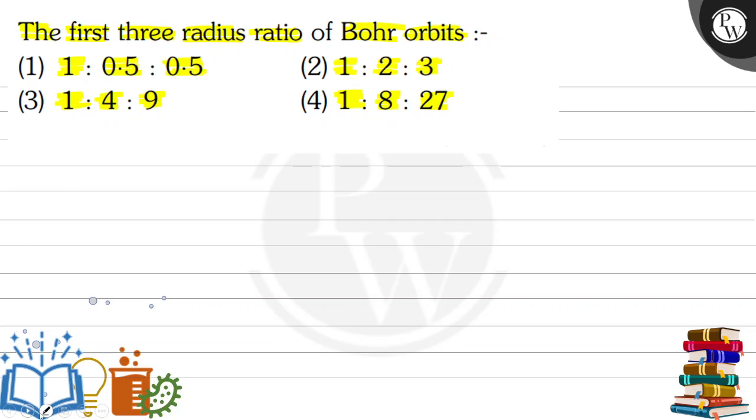So here we can say that our key concept, this is related with application of Bohr model. It means radius of Bohr orbits. This is radius of nth Bohr orbit, rn. This is equal to 0.529 multiply n square upon z. This is angstrom. n is the number of orbit and z is atomic number.